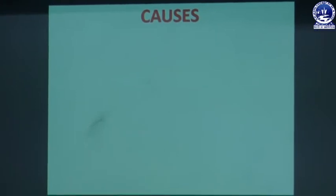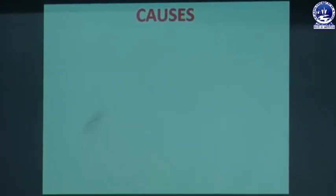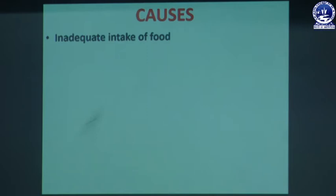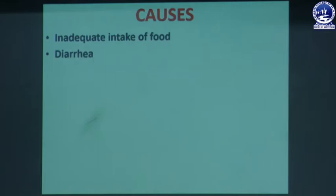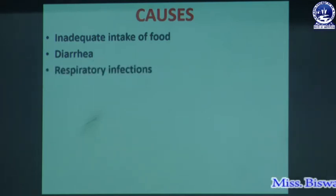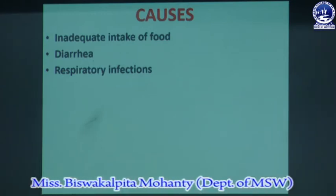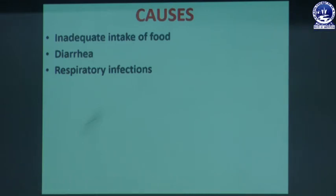The causes of protein energy malnutrition include: inadequate food intake, where the child is not getting proper nutrients required to maintain a healthy life. Diarrhea is another cause — when a child has diarrhea they lose their nutrients, contributing to PEM. Respiratory infections are also a major reason, as some children develop respiratory infections due to health issues or lack of nutrients.